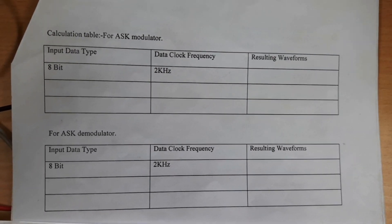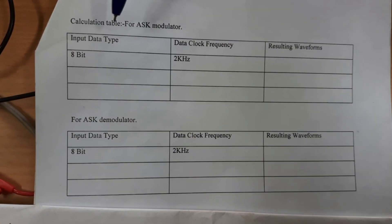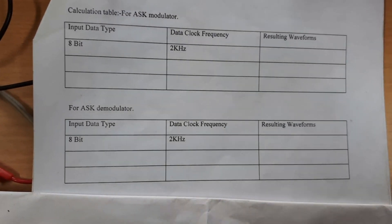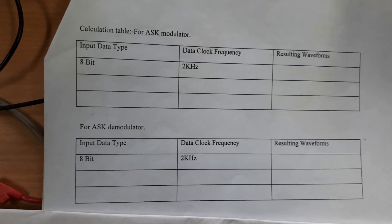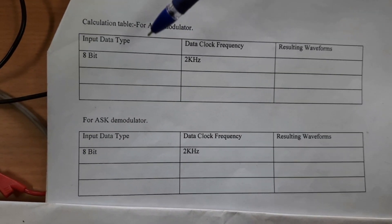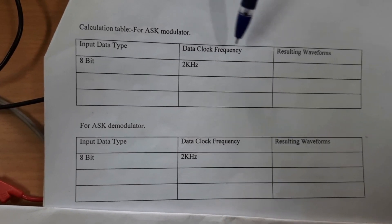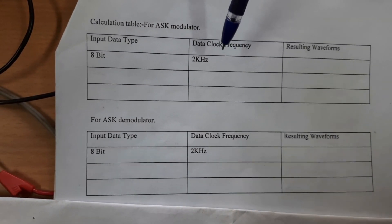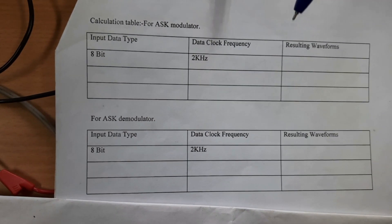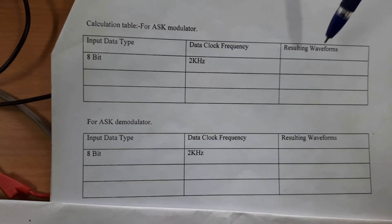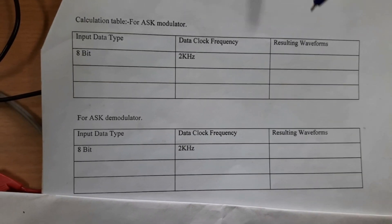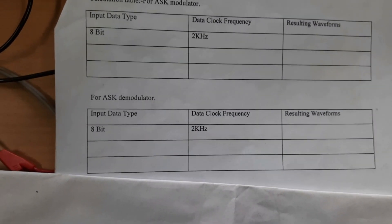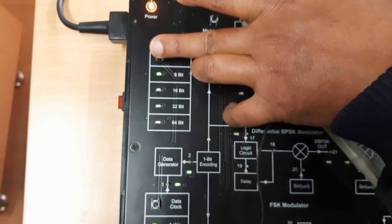In the calculation table for the ASK modulator, first write the input data type — whether 8-bit, 16-bit, or 32-bit. Then record the data clock frequency used, such as 2 kHz or 4 kHz. Finally, draw the resultant waveforms for both input and output.